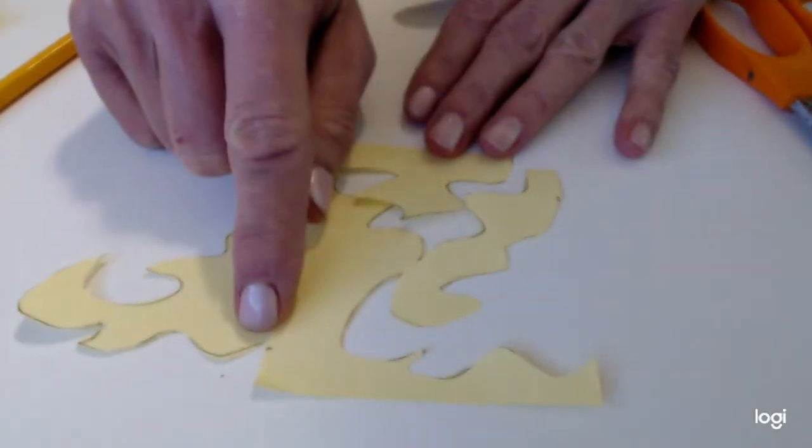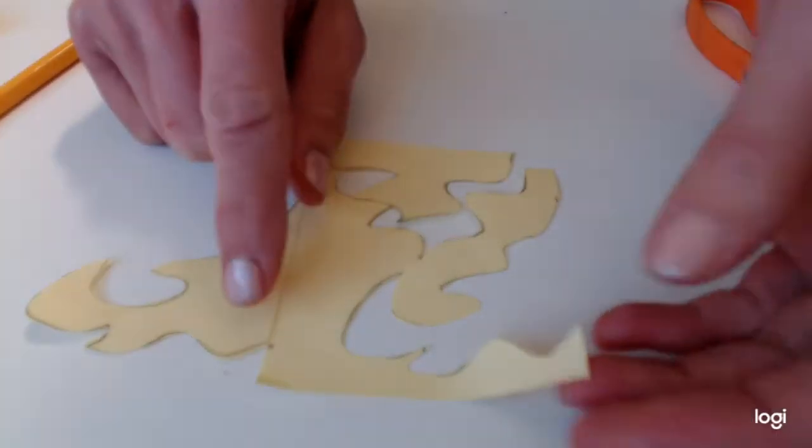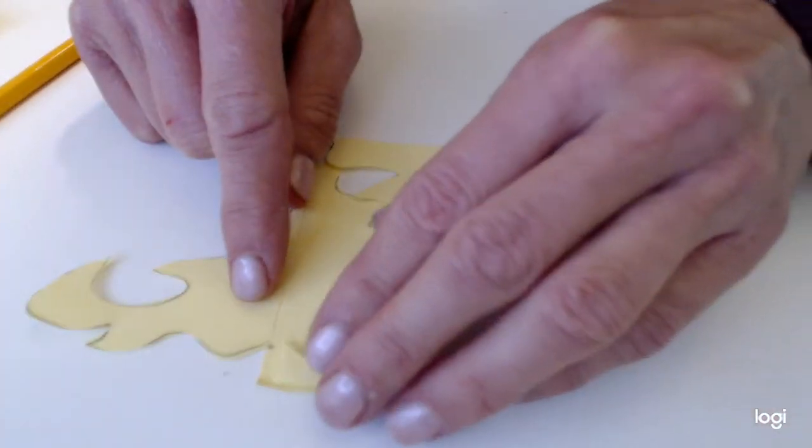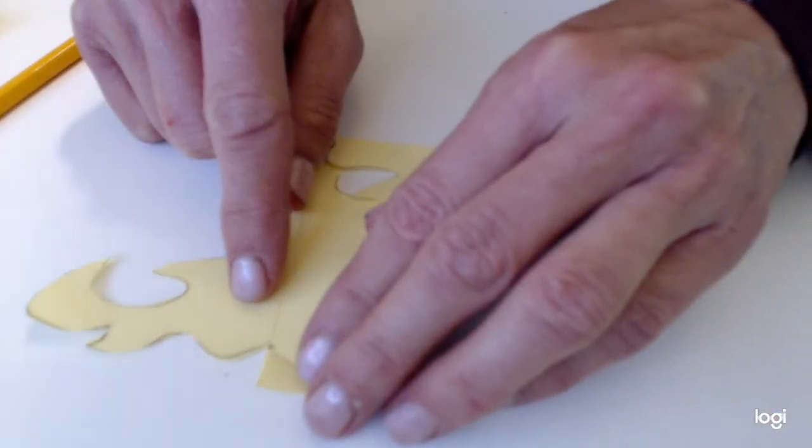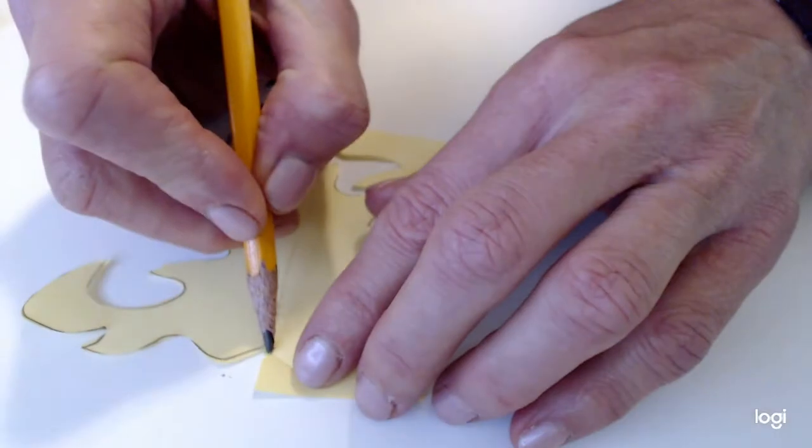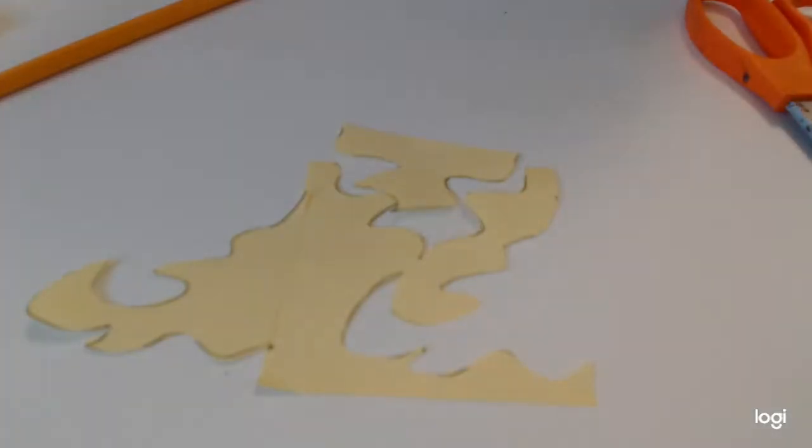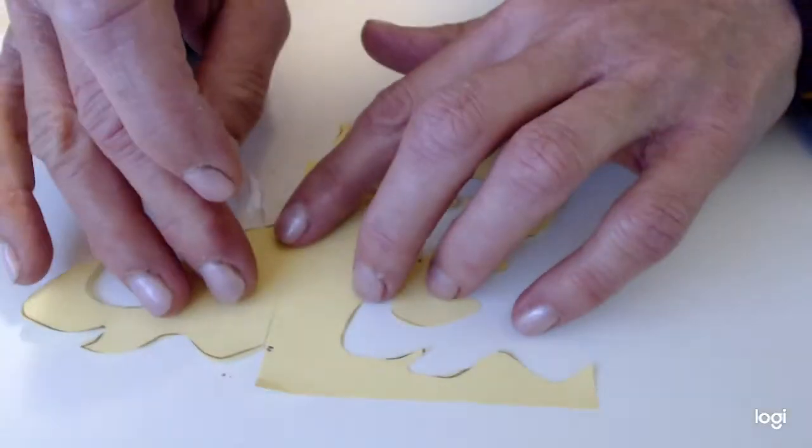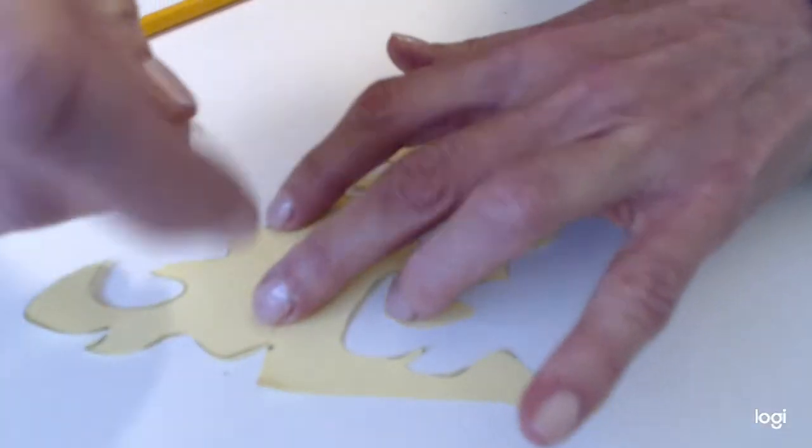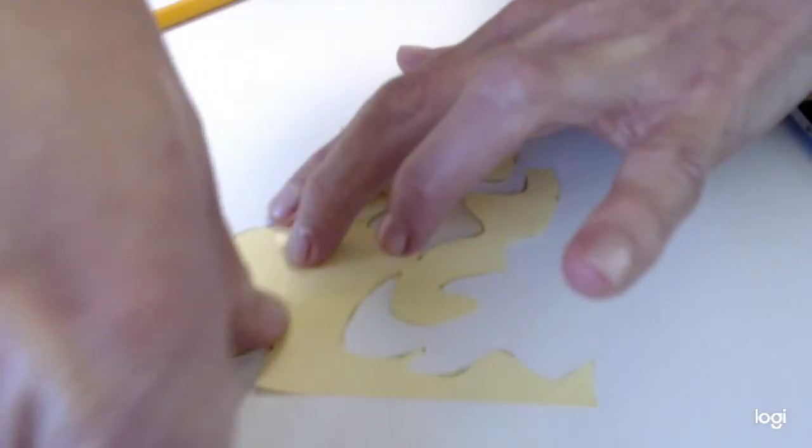To make sure I get it in the right spot right here, I don't want to bend it, so I'm just gonna curve this over so I can see—okay, it goes right there—and I'm just gonna draw a little line. You're gonna need a piece of tape, and I'm gonna tape that piece on.